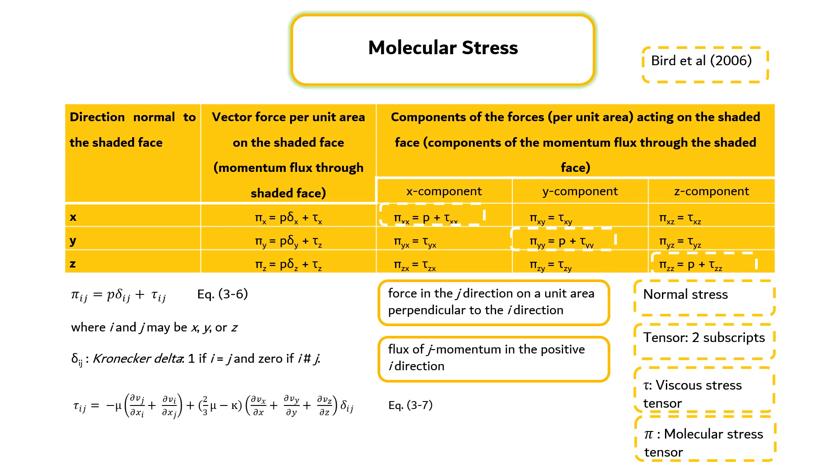The generalization for Newton's law of viscosity can be expressed by Equation 3-7, that consists of nine relations. Tau_yx is the force in the positive x-direction on a plane perpendicular to the y-direction, and this is the force exerted by the fluid in the region of lesser y on the fluid of greater y.